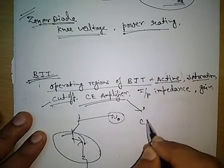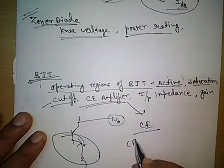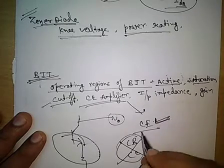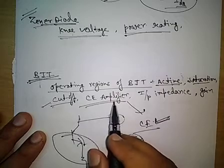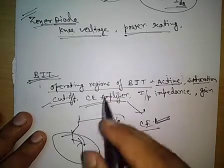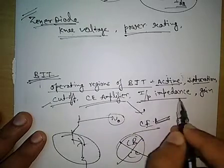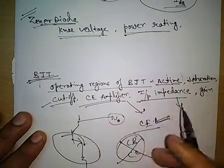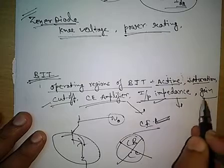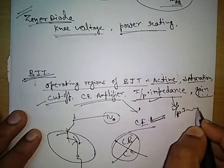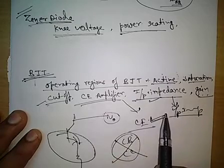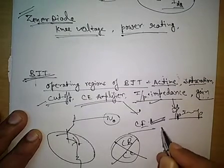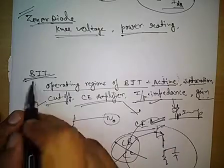The next important BJT topic is the common emitter amplifier, which is very popular. Other amplifier configurations like CB and CC exist but are not frequently asked in the GATE exam — the common emitter amplifier is what's tested most. We must prepare this thoroughly with many questions. Input impedance is also very important; questions ask you to find the input impedance and the gain from a given common emitter amplifier circuit. Output impedance is sometimes asked as well, and comparisons about how impedance changes due to resistance or capacitance at the emitter are also tested.